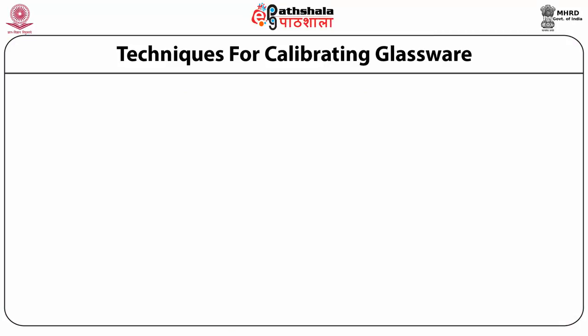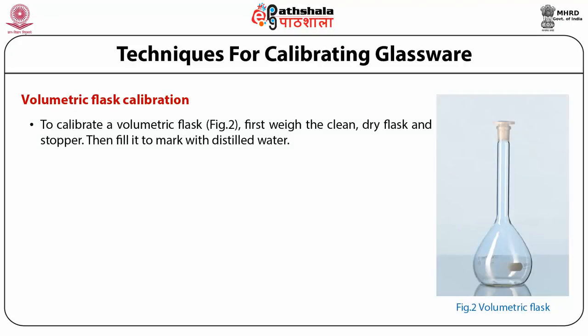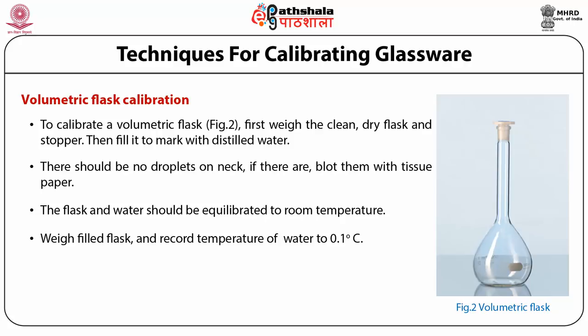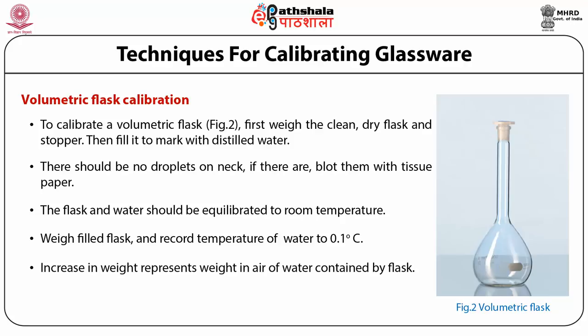Now we discuss techniques for calibrating glassware. For volumetric flask calibration, first weigh the clean dry flask and stopper, then fill it to the mark with distilled water. There should be no droplets on the neck; if there are, blot with tissue paper. The flask and water should be equilibrated to room temperature. Weigh the filled flask and record the temperature of the water to 0.1 degree centigrade. The increase in weight represents the weight in air of water contained by the flask.